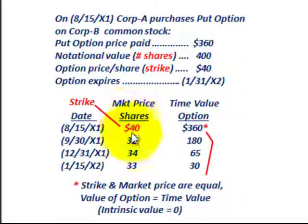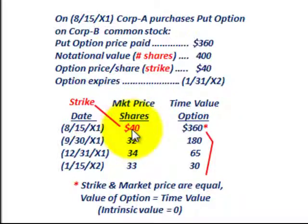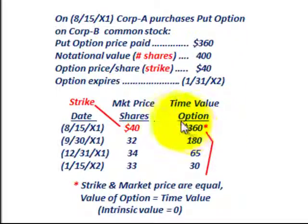Further on with our example, we're going to be given the market price of the shares, and it's going to be decreasing over several periods. When this put option was purchased, the market price per share of stock was $40 and the strike price was also $40 per share. So the market versus the strike — the intrinsic value would be zero. In this case, all the value goes into the time value of the option, and that's $360 — that's what we paid for the put option.